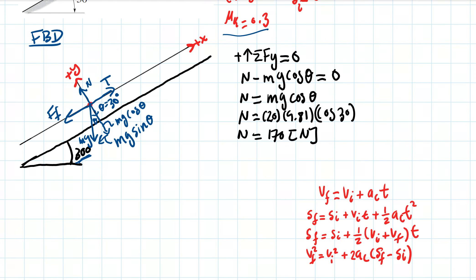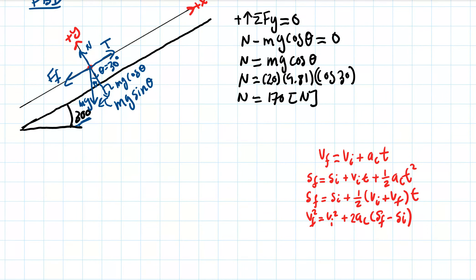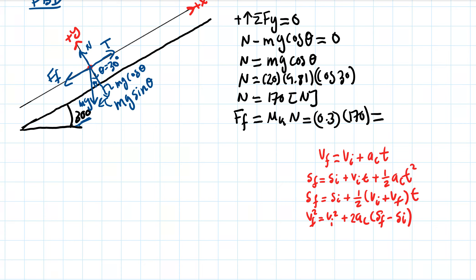There is a relationship between the normal force and friction: the friction force equals μk times N. With μk = 0.3 and N = 170 N, the friction force equals 0.3 × 170 = 51 newtons.